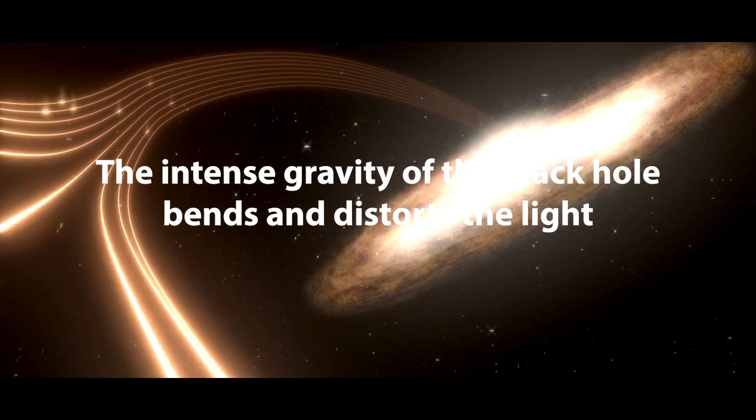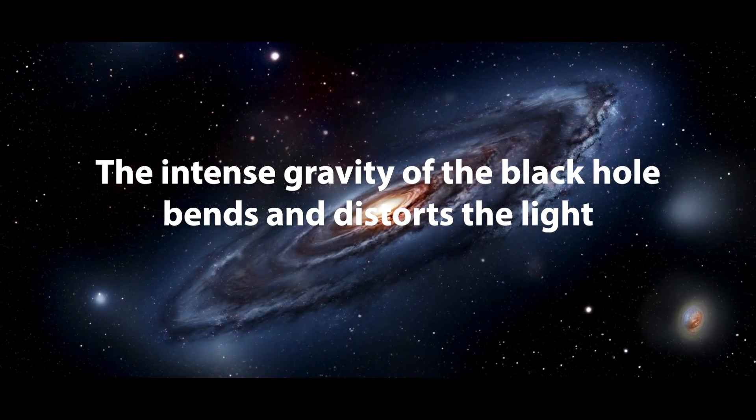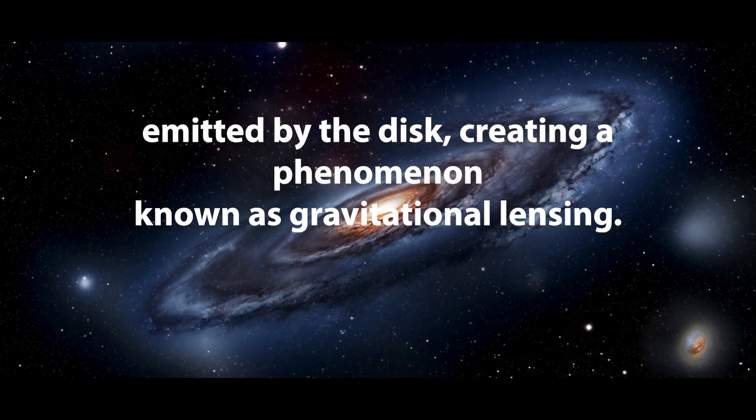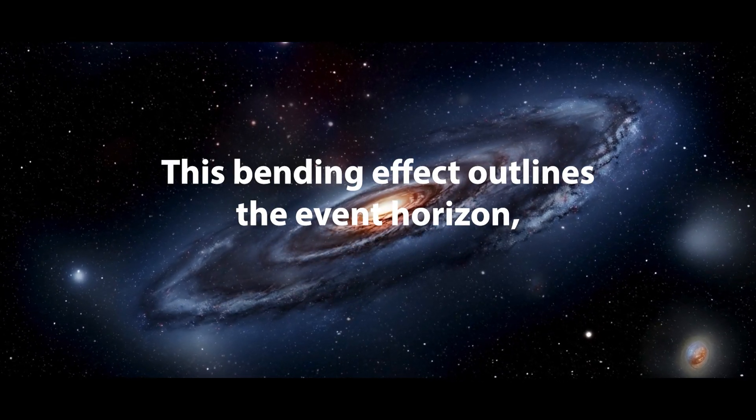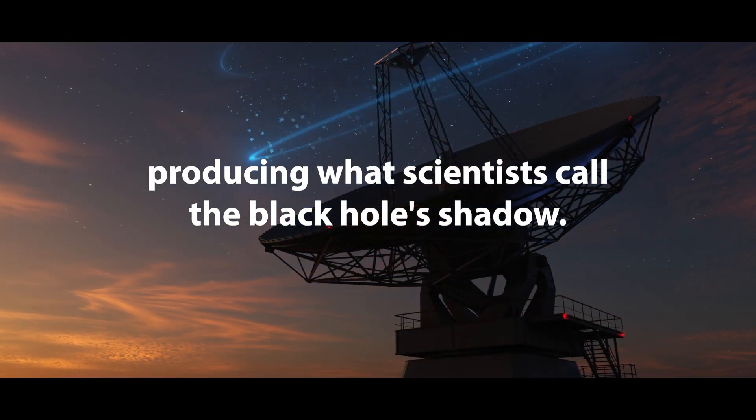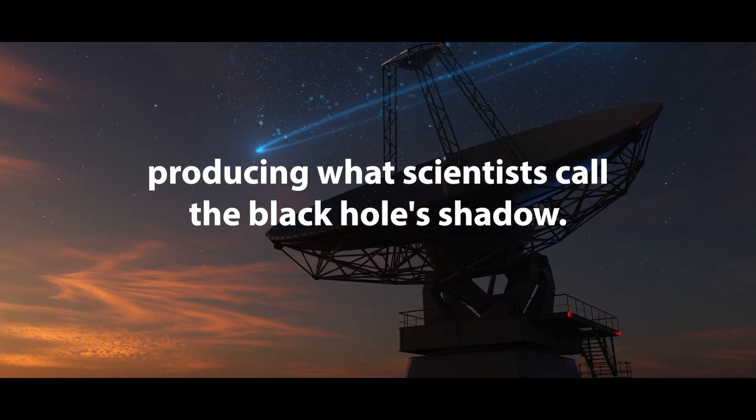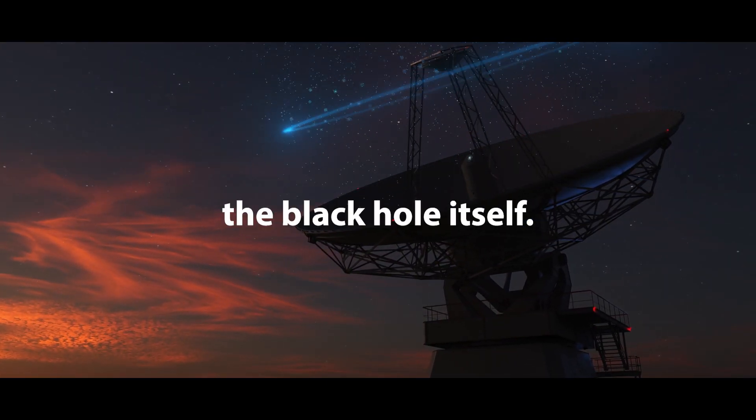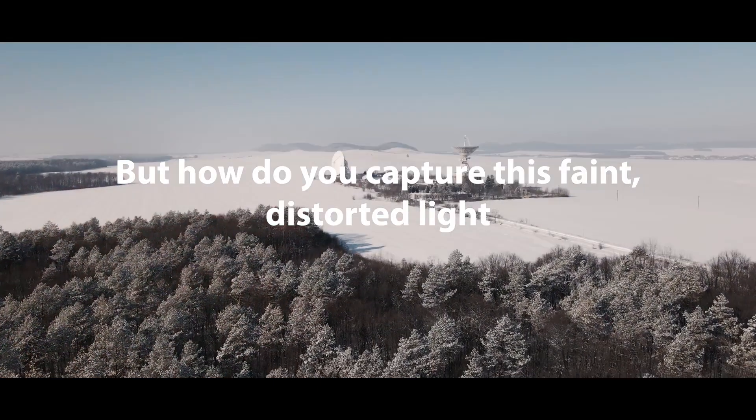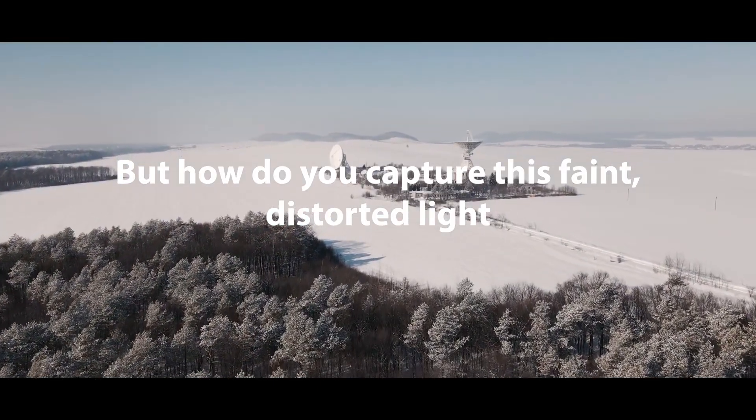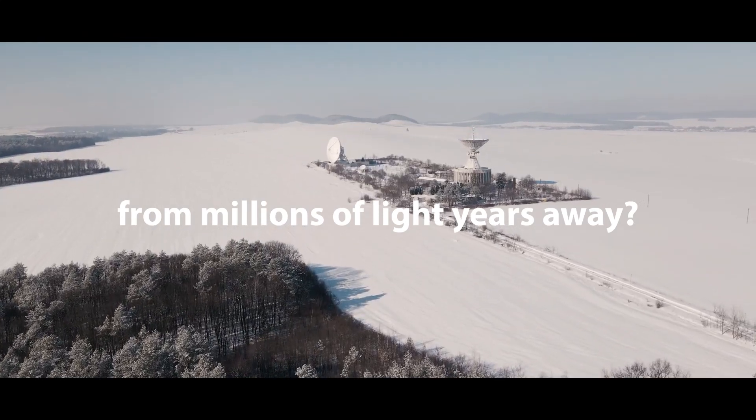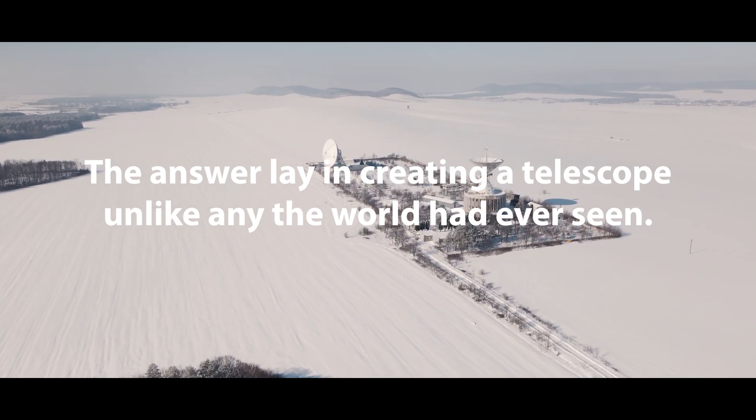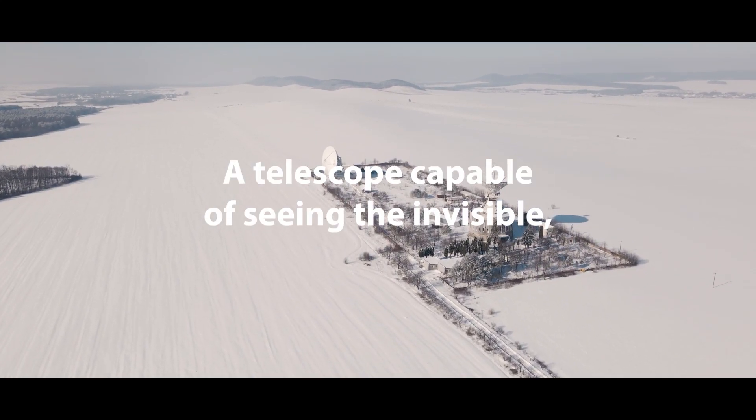This glowing accretion disk offers a crucial clue. The intense gravity of the black hole bends and distorts the light emitted by the disk, creating a phenomenon known as gravitational lensing. This bending effect outlines the event horizon, producing what scientists call the black hole's shadow. By capturing this shadow, we can indirectly visualize the black hole itself. But how do you capture this faint distorted light from millions of light years away? The answer lay in creating a telescope unlike any the world had ever seen, a telescope capable of seeing the invisible.